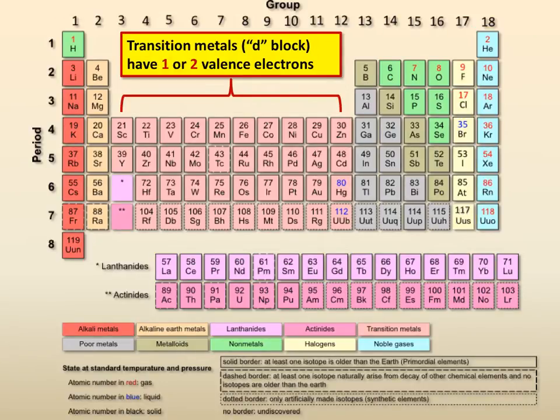Now, the transition metals, a lot of times we don't talk about them because they're variable. There's just not as much of a pattern to how many valence electrons they have. Typically speaking, they have one or two, but even when you saw it in the ion thing, they generally speaking make different kinds of ions. So really, we're going to focus on the Roman numeral groups one through eight, or one, two, and then 13 on.